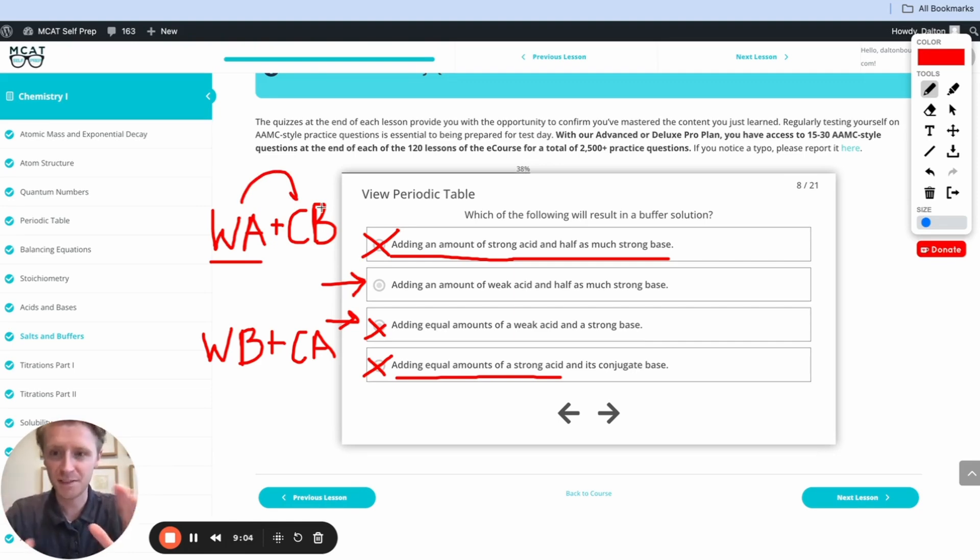So half of those weak acid molecules, because the protons are being yanked off by the strong base, are going to become the conjugate base. And then we'll have the balance that we want. We'll have half and half. So this is going to be our correct answer. Let's go ahead and check it out.